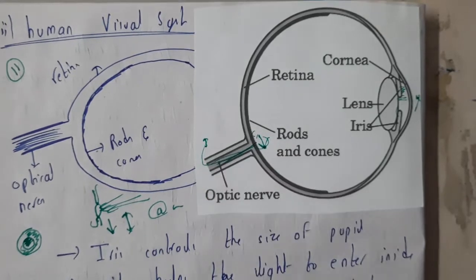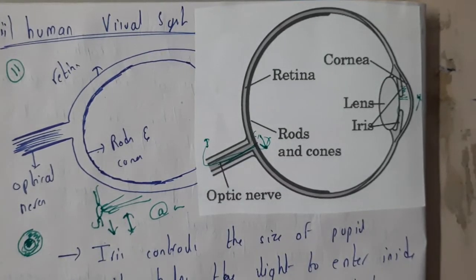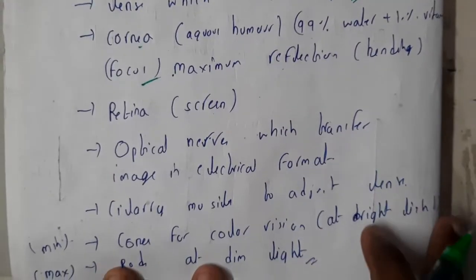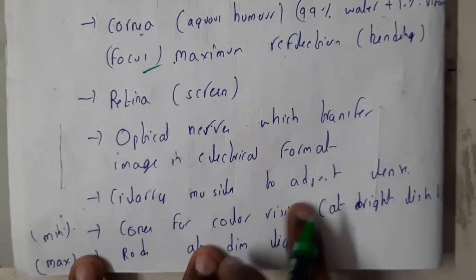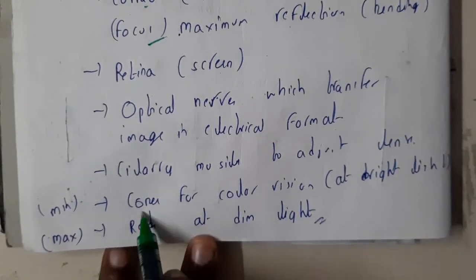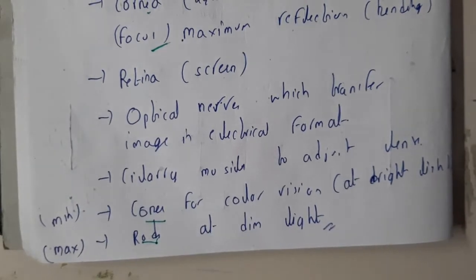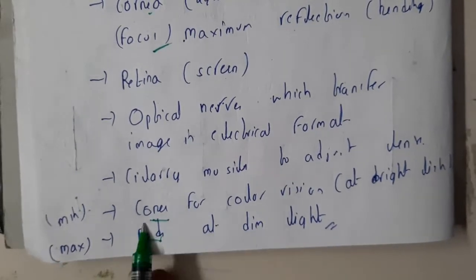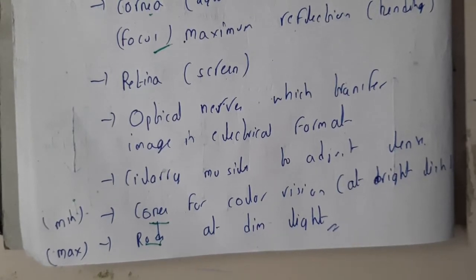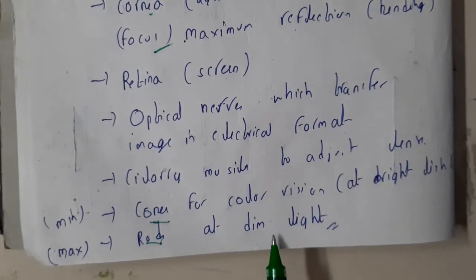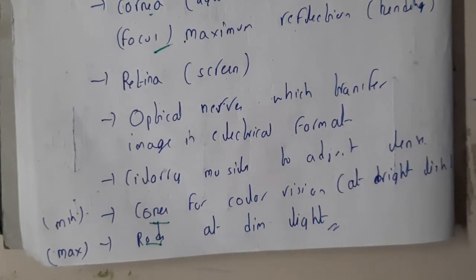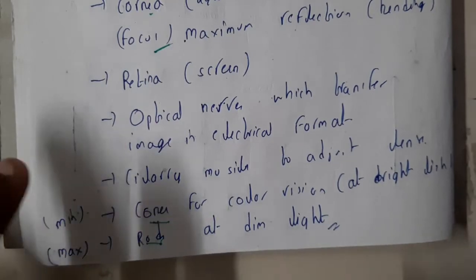The optical nerve transfers the particular image to our brain, where synthesis happens. We also have the ciliary muscles, which contract and enlarge whenever required. And we have cones and rods: cones are used for color detection in bright light, and rods are used for the same color detection but in dim light.